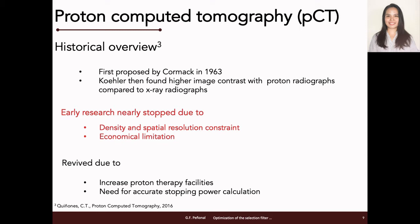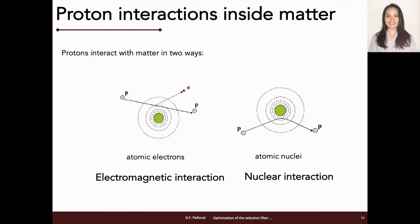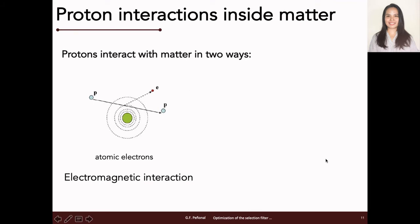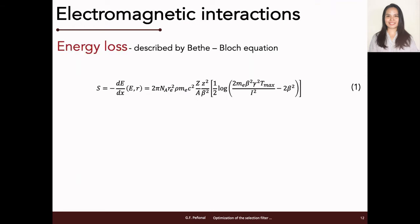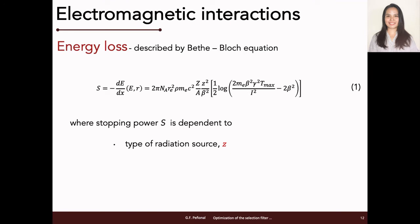To take these constraints into account, a better understanding of the physical interaction of protons traversing inside a medium is necessary. Protons interact with matter in two ways: with the atomic electrons or with the atomic nuclei. When protons interact with the atomic electrons of the target material, they undergo multiple Coulomb scattering, which causes small-angle deflection of the proton's path while losing a minimal amount of energy. The rate of energy loss, or the stopping power S, is best described by the Bethe-Bloch equation shown in Equation 1, which is highly dependent on the type of radiation source (represented by Z), the incident energy (directly proportional to beta), and the density of the target material (denoted by rho).